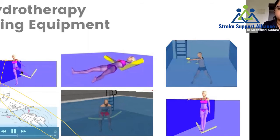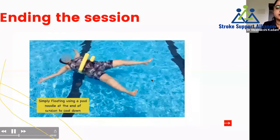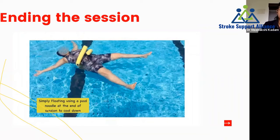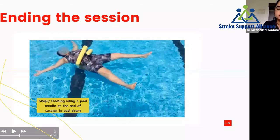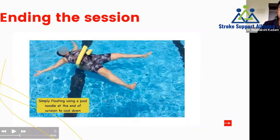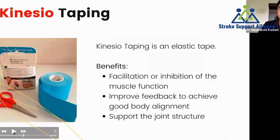At the end of an aquatic session, I usually do a simple floating exercise as a cool-down — similar to warm-up, exercise, and cool-down in a gym. Using a pool noodle placed under the patient's waist, the patient — here a patient with right-sided paralysis — floats comfortably and relaxes. This is very relaxing at the end of the session when the patient is also tired, just before getting out of the pool.